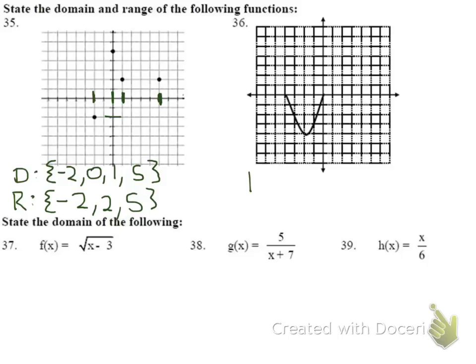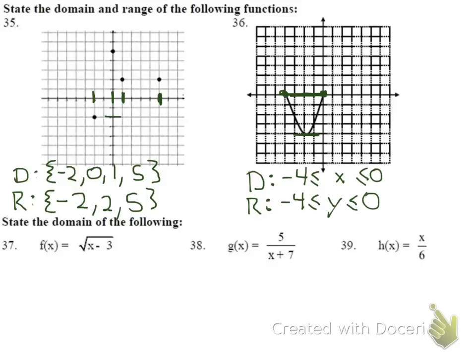For number 36, the domain (x values) runs from −4 to 0. The range (y values) has a maximum at 0 and a minimum at −4, so the range is [−4, 0]. Since the graph has endpoints with no arrows, it stops there and we can state the domain and range precisely.